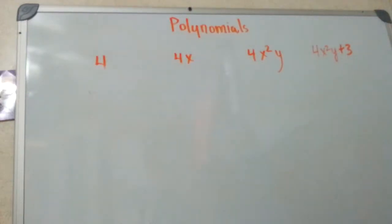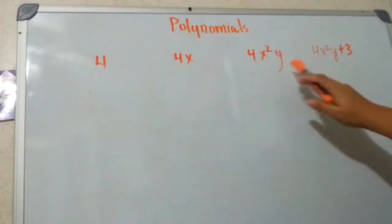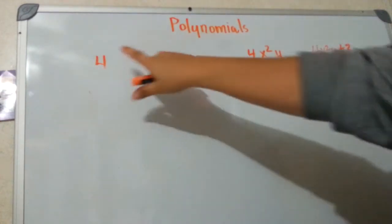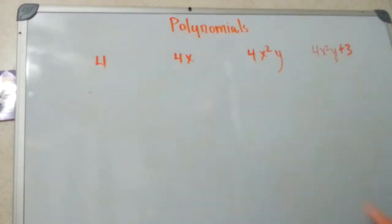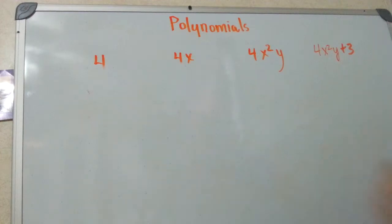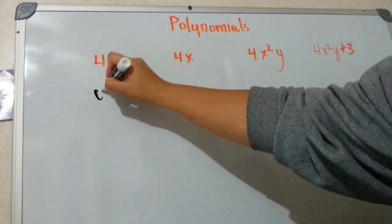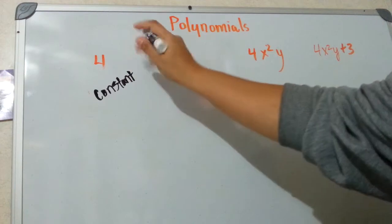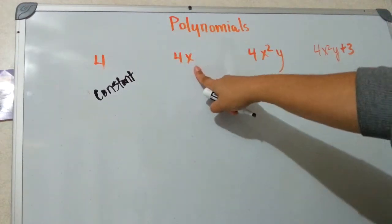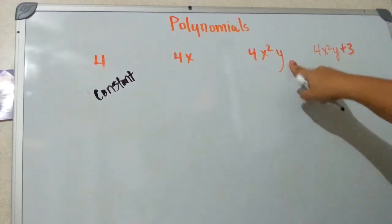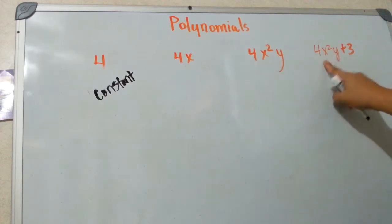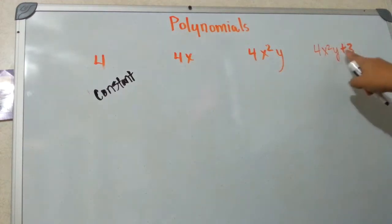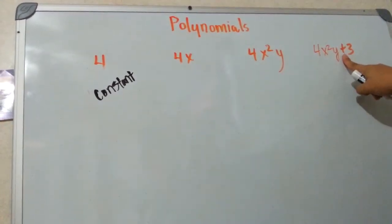Let's have a discussion of what makes something a polynomial. All of these right here are examples of polynomials. Even though this one doesn't have a variable, it's still a polynomial — we just call it a constant. This one has one variable. This one has two different variables, but it's still a polynomial. This one has two terms because of the plus sign, but it's still a polynomial.